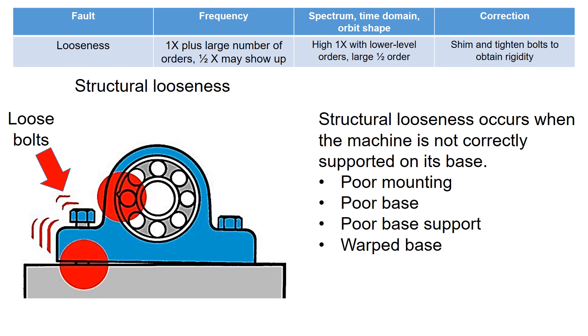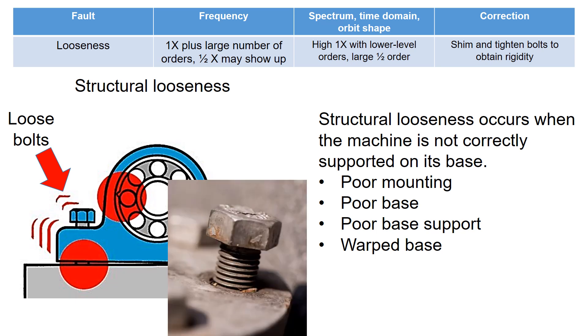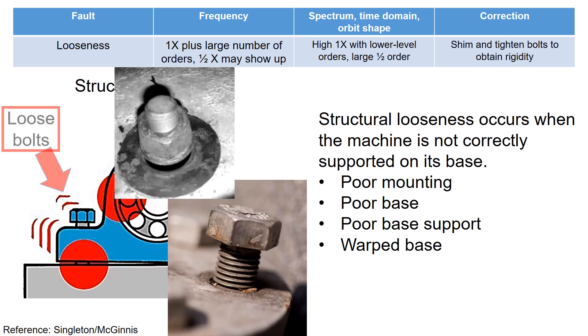Structural looseness manifests when the machine lacks proper support in its base. Poor mounting, poor base support, and distorted base can contribute to structural looseness. Of course, the primary cause of major issues often stems from loose bolts.